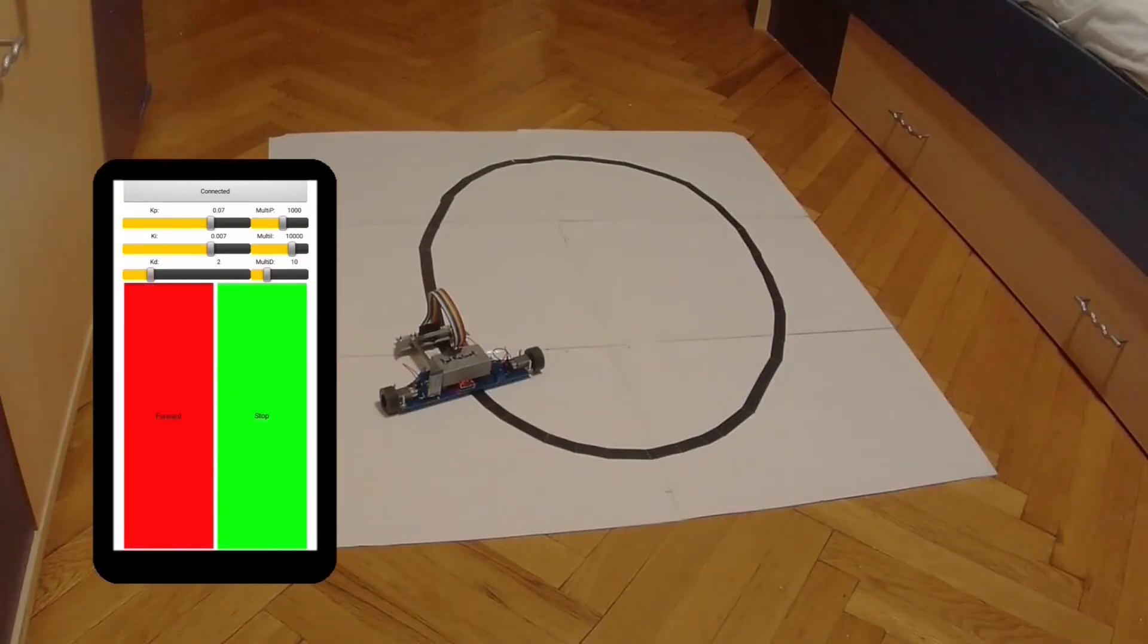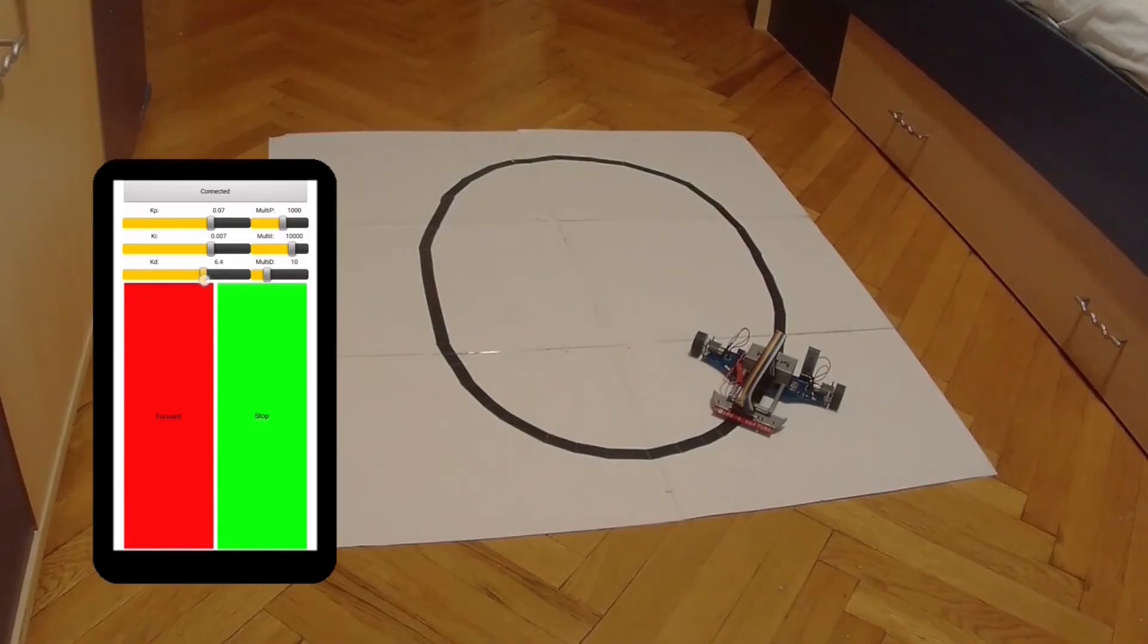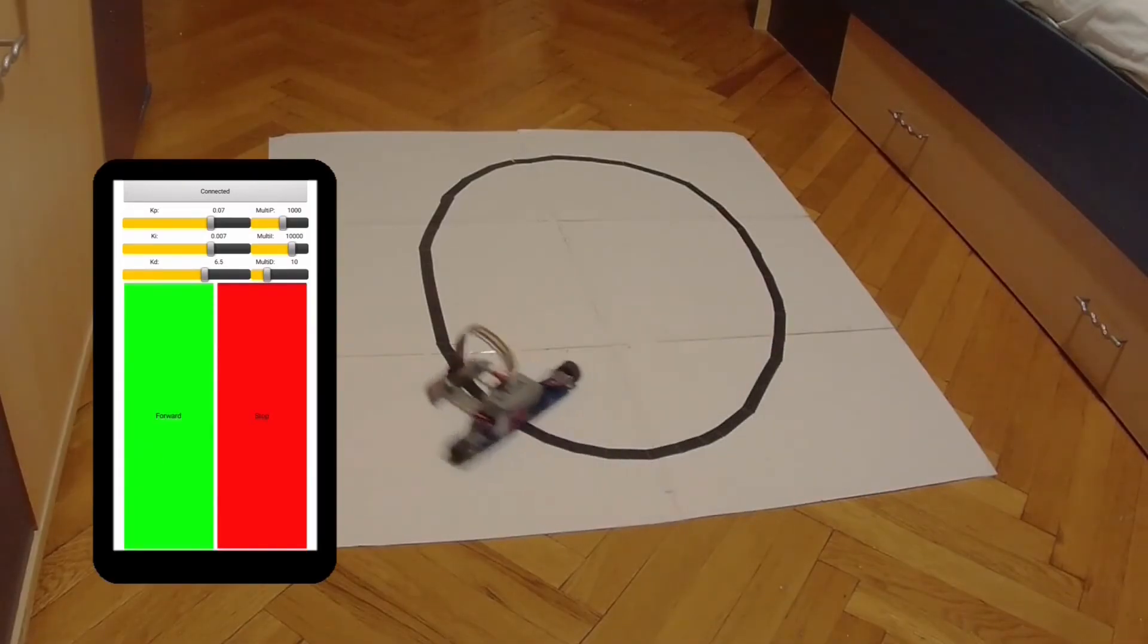In case of a higher derivative value, the robot will try to correct errors that should be ignored, trying to get the line to the center of the sensor array. This will result in lower speeds; however, the robot will remain on track.